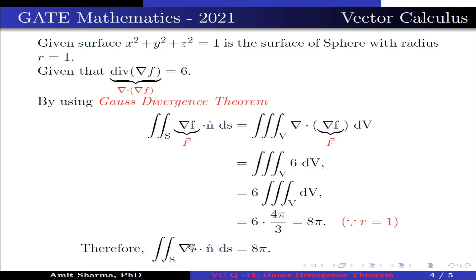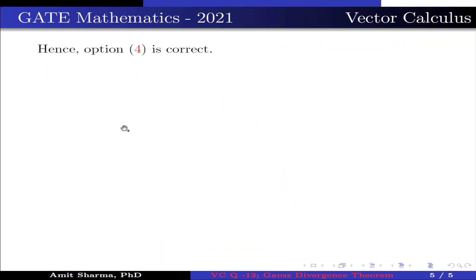Therefore, double integration over S del f dot n ds is 8π. Hence, option 4 is correct.